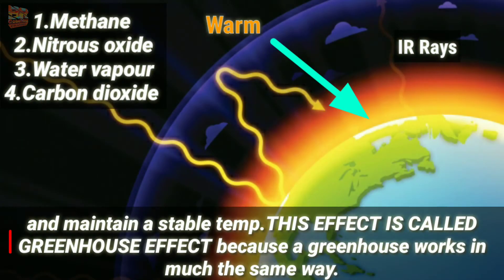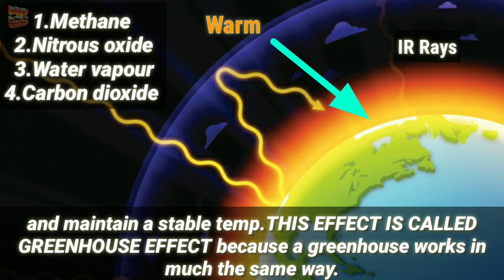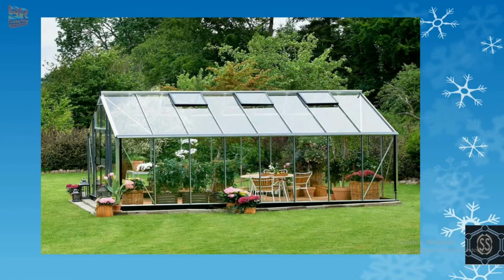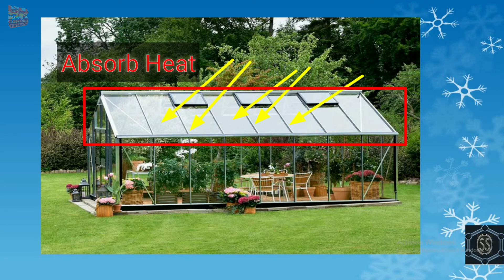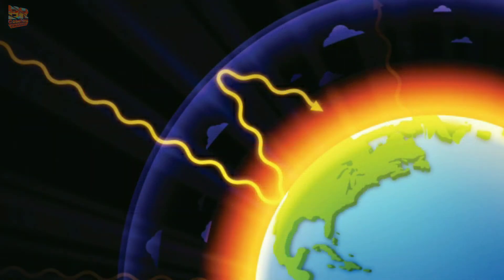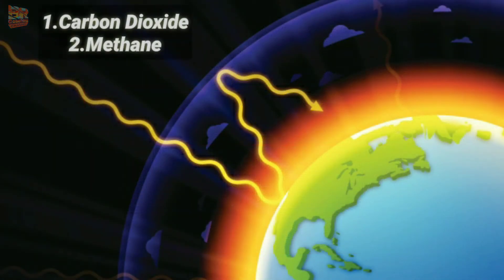This effect is called the greenhouse effect because a greenhouse works in much the same way. During winters, plants are kept in a greenhouse — a place covered with glass. When heat and light enter, the glass does not allow the heat to go back out; the heat is retained and keeps the plants warm. Similarly, when heat and light from the sun enter our atmosphere, some gases like CO2 and methane do not allow the heat to reflect back to space. Therefore these gases are called greenhouse gases.